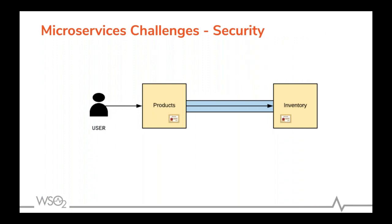Let's look at security. Microservices communicate over the network, so we need to ensure secure communication. Implementing security protocols in each and every microservice is an overhead for service developers. Implementation varies across languages and libraries, introducing additional governance overhead in the organization.